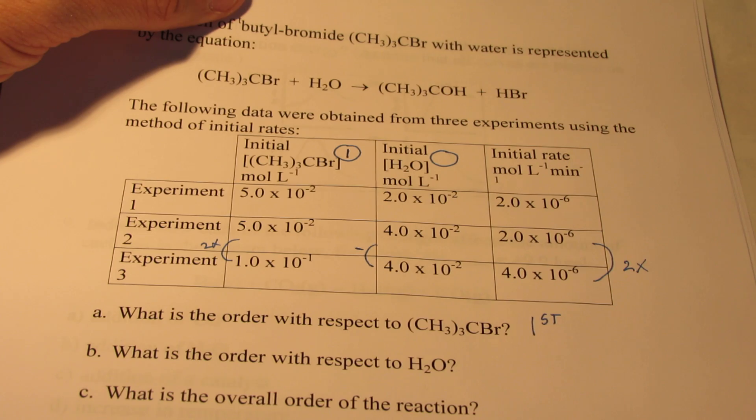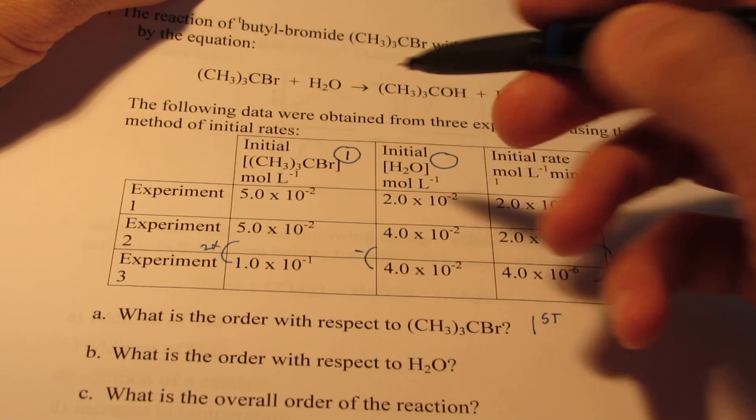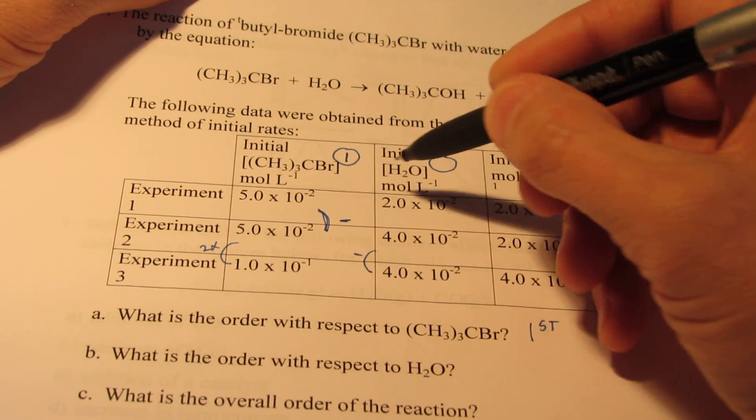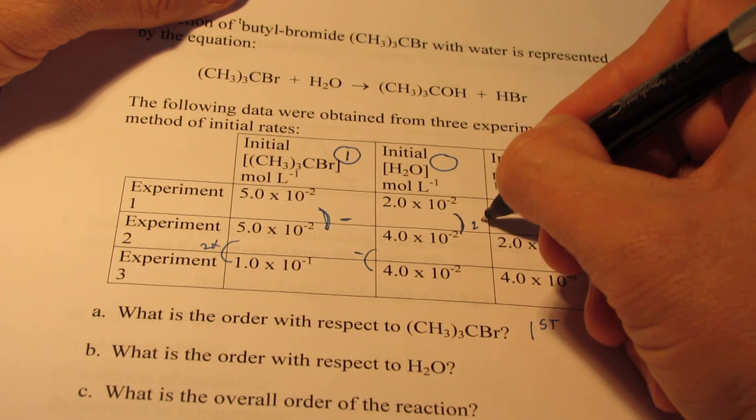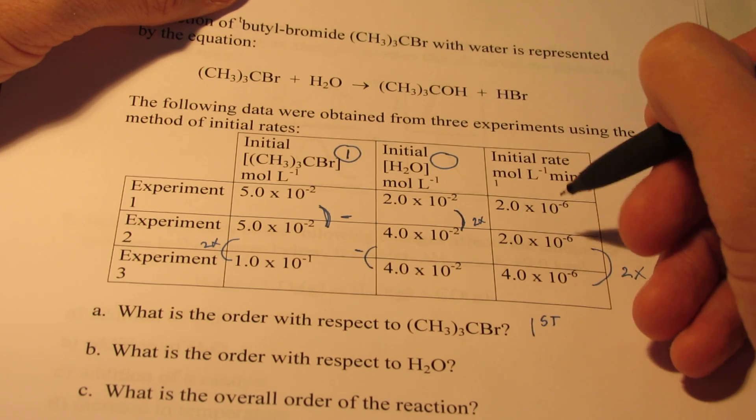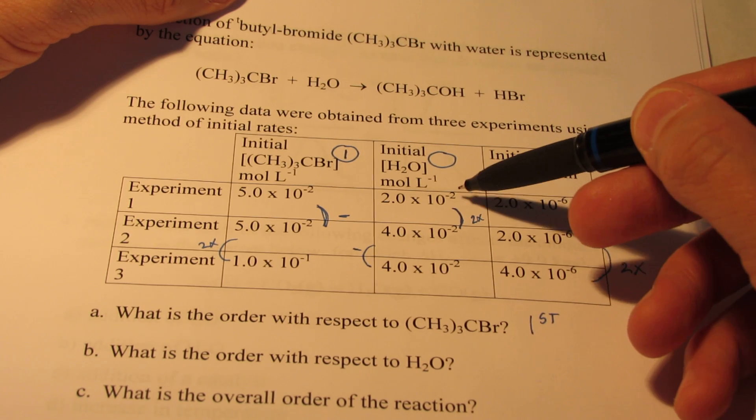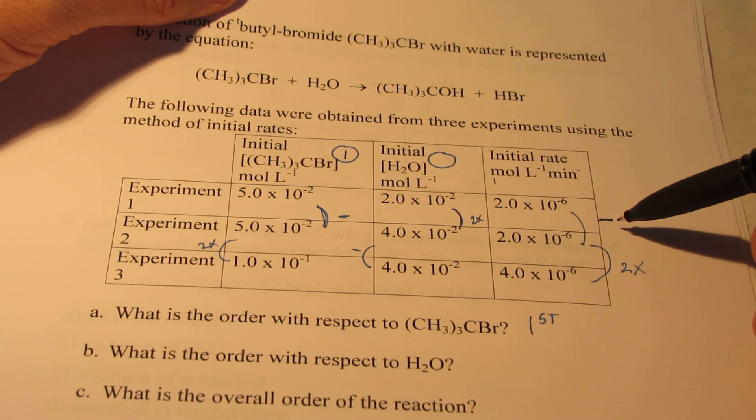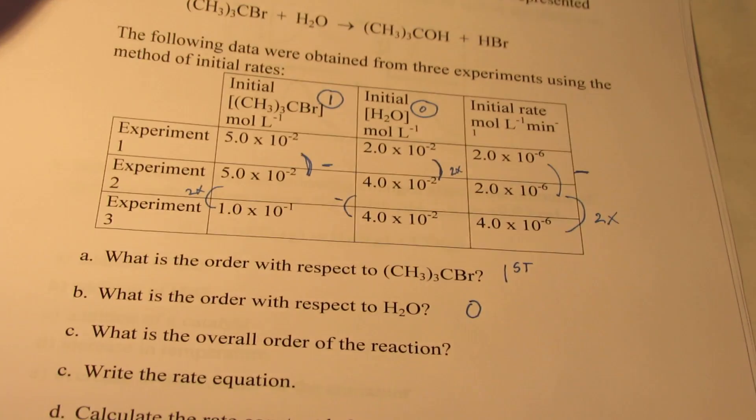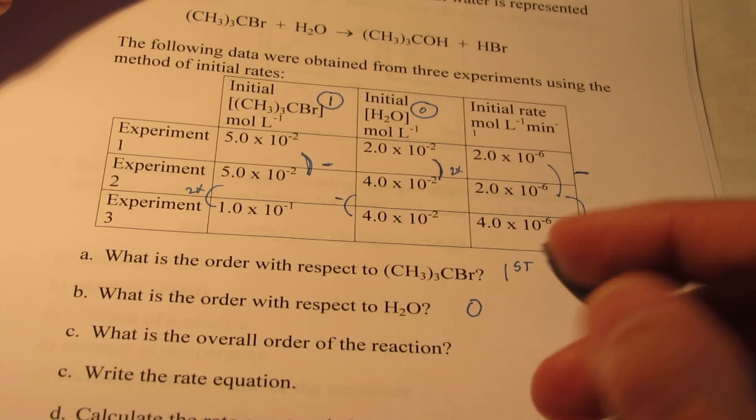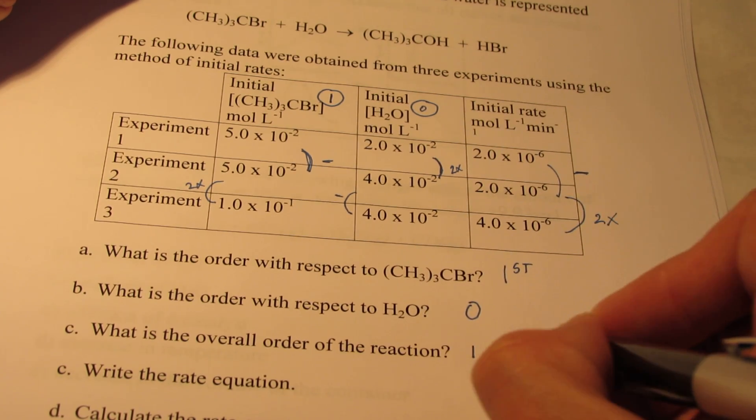How about the order with respect to water vapor? Well, now we want the water vapor to change while the other reactant stays constant. So in experiments one and two, you can see the butyl bromide stays constant this time. But the water vapor doubles, 2 times 10 to the negative 2nd to 4 times 10 to the negative 2nd. And the rate doesn't change at all. So, even though water vapor is doubled, it has no effect on the rate. Remember, we call those zero order reactants. So I'm going to put zero on my answer sheet.